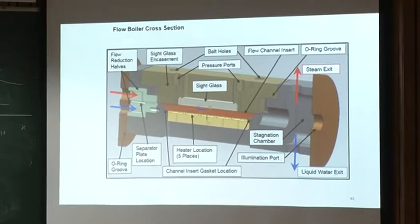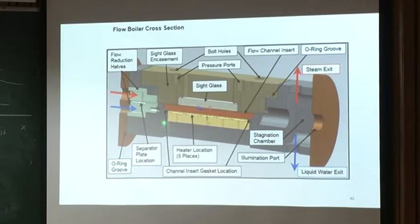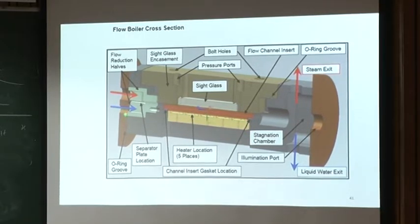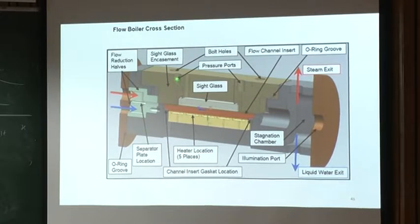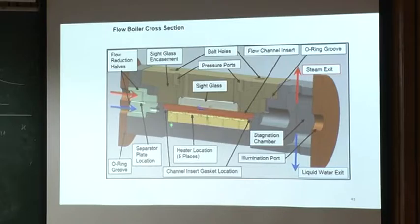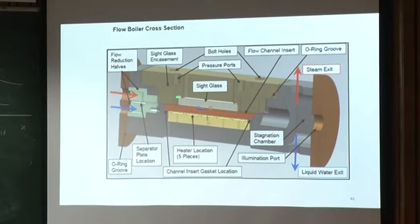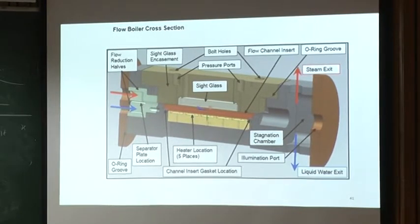So you have these are the locations for the heaters 1, 2, 3, 4, half on that side 5, and liquid flow. There is a convergence, flow reduction half, side glass, these are the pressure ports running through the hole through the steel casing, the bolt holes, O-ring groove. Here all places where you could have leaks are being handled by O-ring grooves and compression.